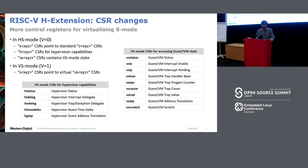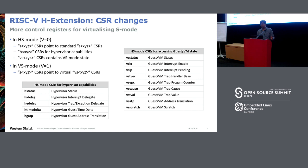There are new CSRs accessible only to HS mode. Two types are added: H-prefix CSRs, which provide hypervisor capabilities to HS mode, and VS-prefix CSRs, which allow HS mode to access the state of VS mode. When running in VS mode, all accesses to S mode CSRs map to VS CSRs. These are all the CSRs newly added for the H extension.